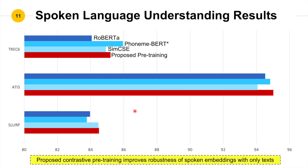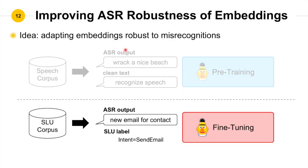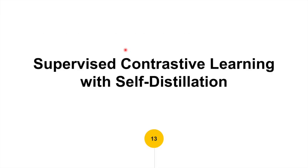Here are our results. Our proposed pre-training methods show significant improvement over RoBERTa across the datasets. We also outperform SimCSE in all datasets by providing additional information of the correct and erroneous text. We still lose to PhonimBERT on SNIPS, but they require additional information. Next, let's look at the fine-tuning stage, where we propose two techniques to improve model robustness to noise.